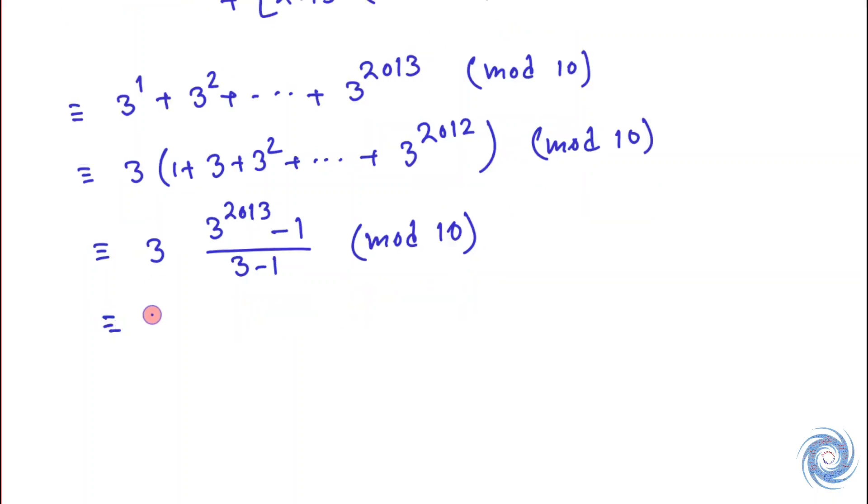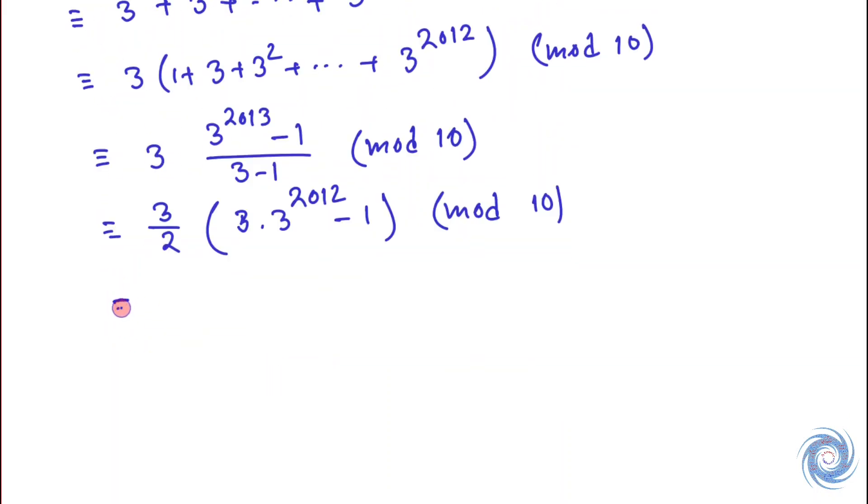So this is equivalent to... which simplifies to 3 times (3^2012 - 1) over 2, mod 10.